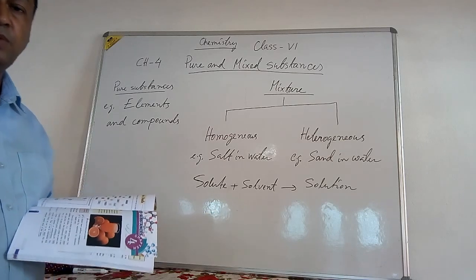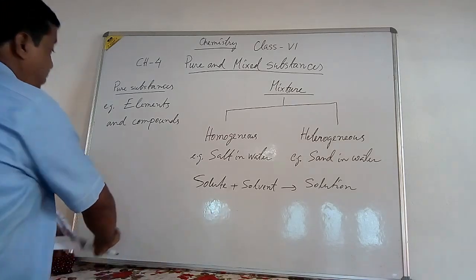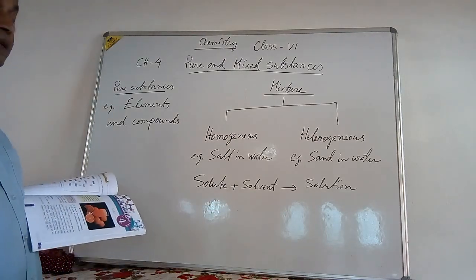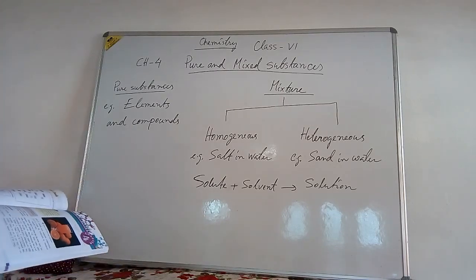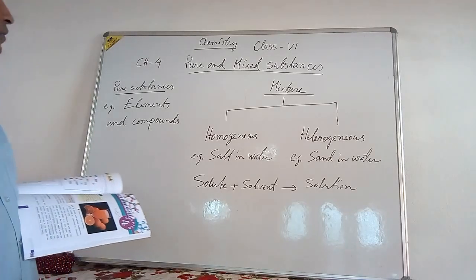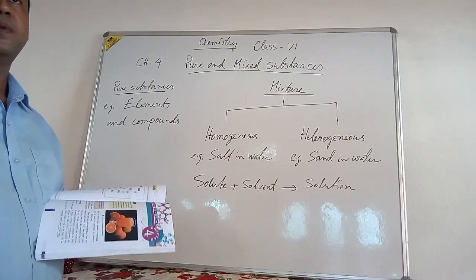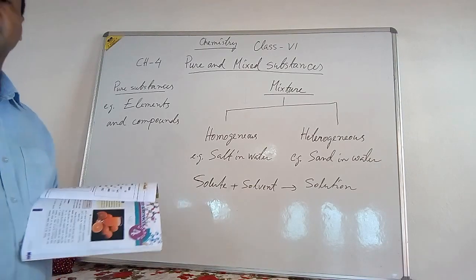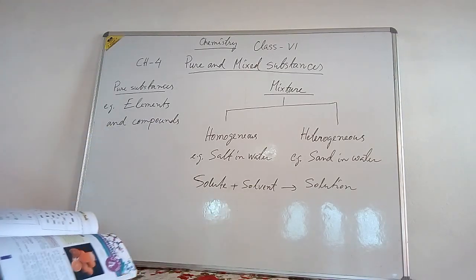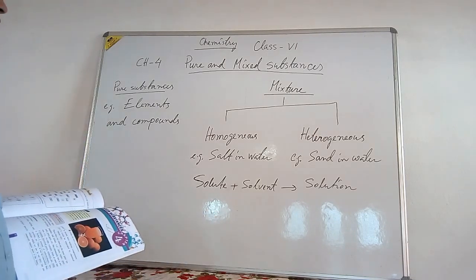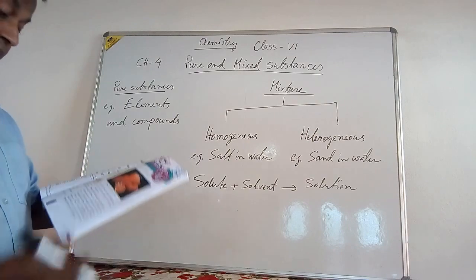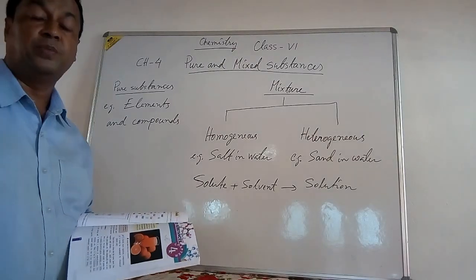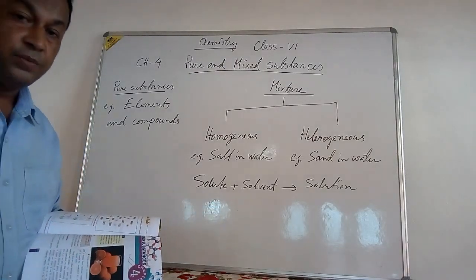Elements and compounds are made up of only one type of molecules. For example, oxygen is made up of only molecules of oxygen. Compounds, like water, are made up of only molecules of water. Pure substances have a fixed boiling point, melting point, and fixed specific gravity. They have uniform composition, and their components cannot be separated by physical means — only by chemical processes.